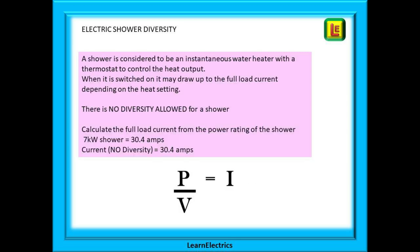Next on my list might be an electric shower. Again, what is the current rating of the shower? A clue might be the size of the circuit breaker. A 7 kilowatt shower should be protected by a 32 amp breaker, and a 9 kilowatt shower by a 40 amp circuit breaker. A shower is considered to be an instantaneous type water heater with thermostatic heat control. There is no diversity allowed for electric showers, so we calculate and use the full load current. If this was a 7 kilowatt shower, 7000 watts divided by 230 volts gives us 30.4 amps. The demand current to use is 30.4 amps with no diversity allowed.